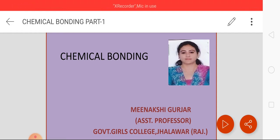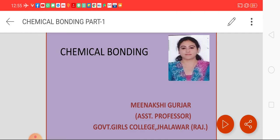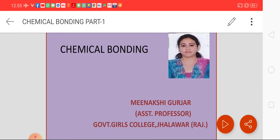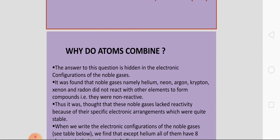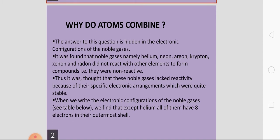Chemical Bonding means क्या होता है? ऐसी bonding जिससे कि chemicals का formation होगा — chemical compounds का formation होगा. At first, a question arises in our mind: why do atoms combine? आखिर atoms combine क्यों होते हैं?